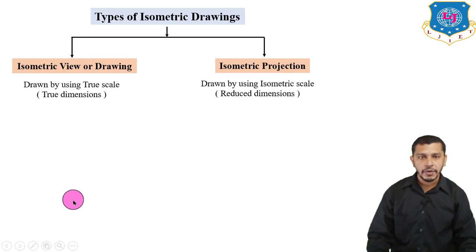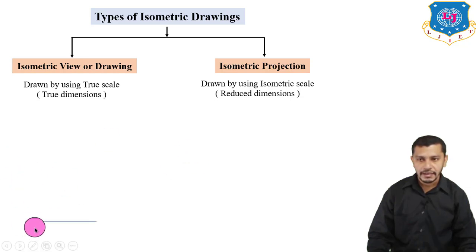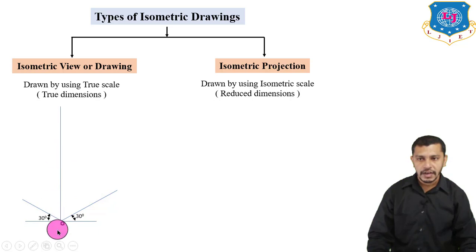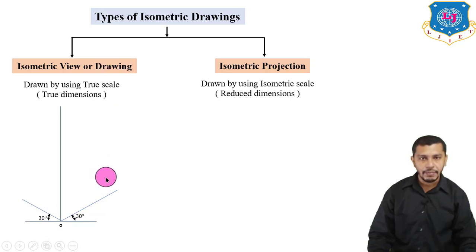Let's try to draw the isometric view of a cuboid having length L mm, width W mm, and height H mm. First, we draw a baseline. From this baseline, we draw lines inclined at 30 degrees on both sides, which shows us the isometric axis. Then we draw a line perpendicular to the baseline — these are the isometric axes.